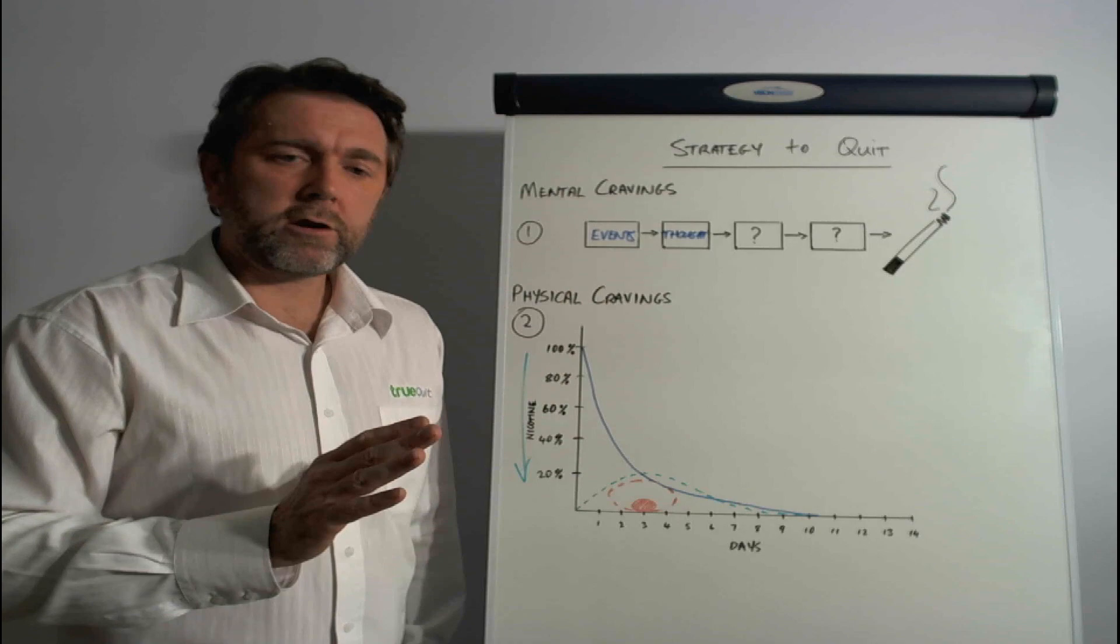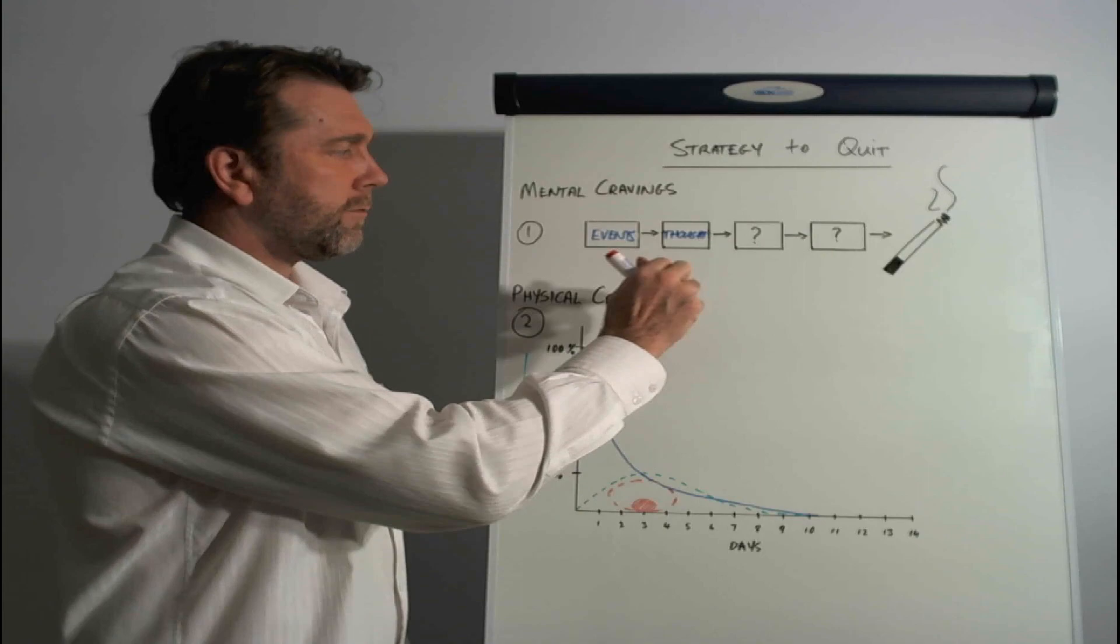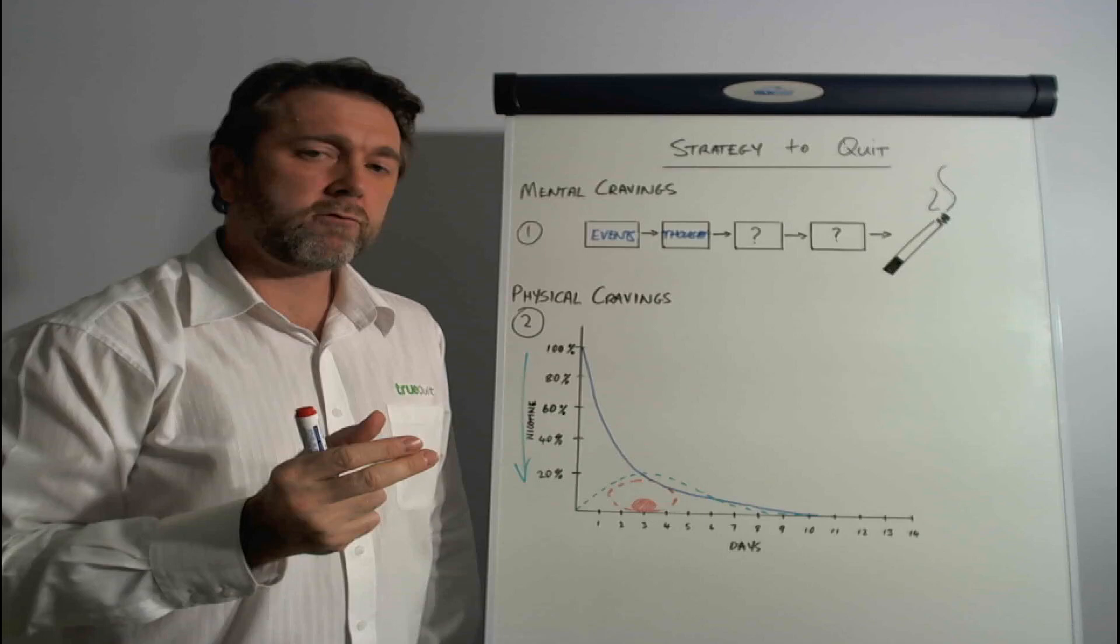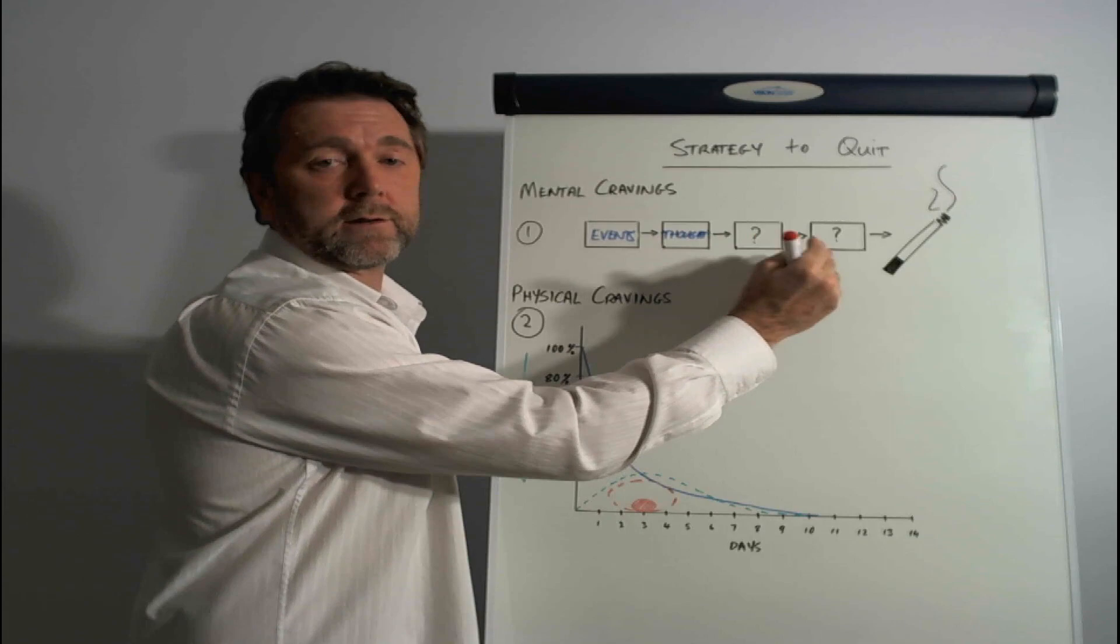Now, the strategy that we use here is to eliminate one of these stages. Because if this is a chain reaction, and if you could just take out one of these stages consistently, it really wouldn't matter which one that you took out, then you wouldn't progress to the next stage.